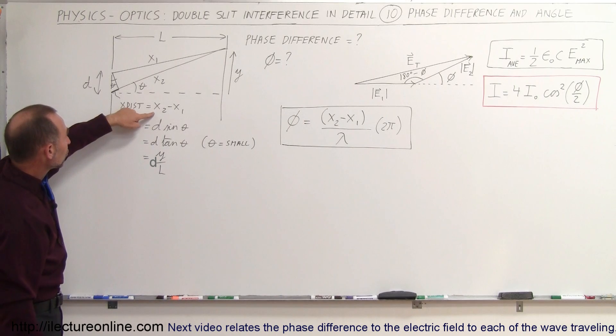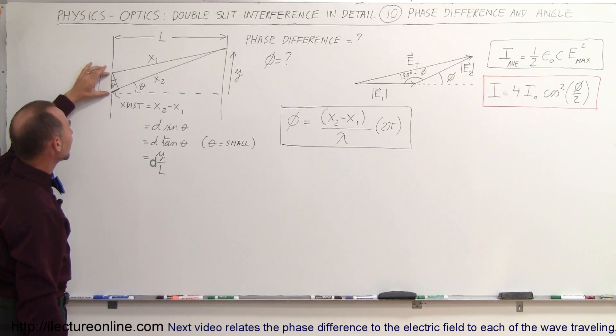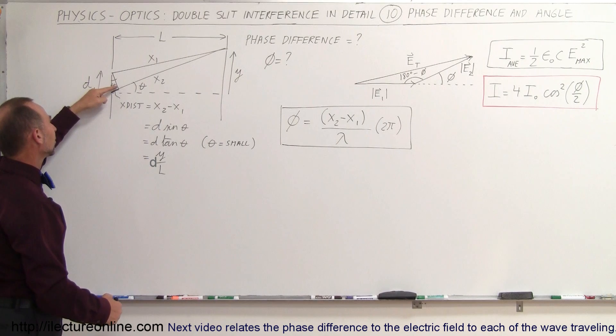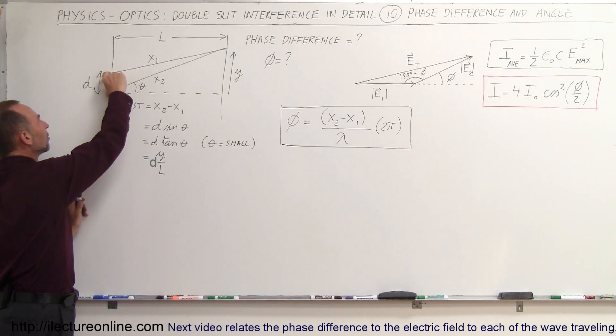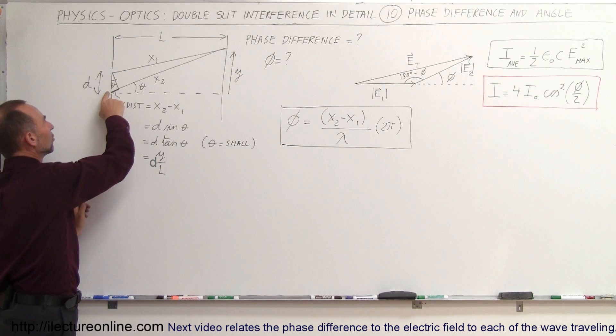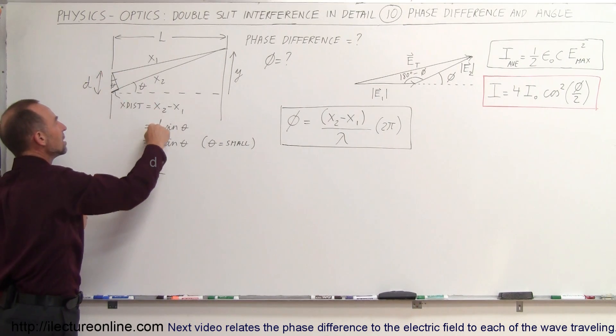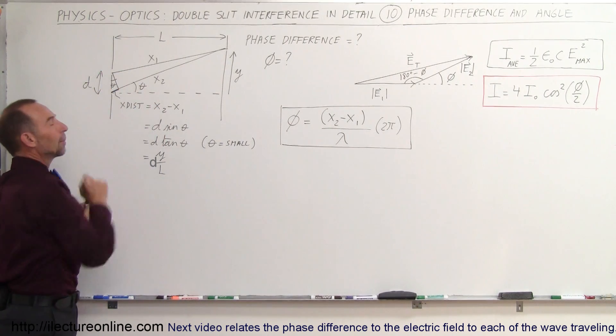So the extra distance traveled is equal to the slit distance times the sine of theta. Remember, if you look at this triangle right here, that's a right angle triangle. The extra distance here is opposite to the angle. This is the hypotenuse. So the extra distance traveled equals the hypotenuse, d, times the sine of theta, which is the opposite side.